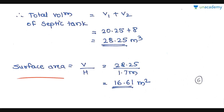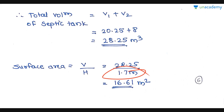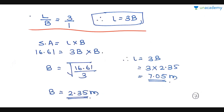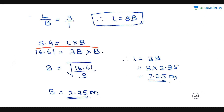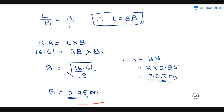After finding the volume, we can find surface area easily. Surface area = Volume / effective height = 28.25 / 1.7 = 16.61 m². Next, using the L to B ratio of 3:1, L = 3B. Surface area = L × B = 3B × B = 3B². So B = √(16.61/3) = 2.35 m. Therefore, L = 3 × 2.35 = 7.05 m.